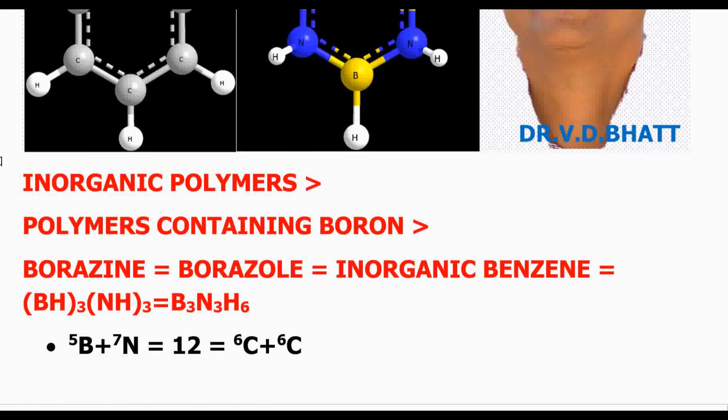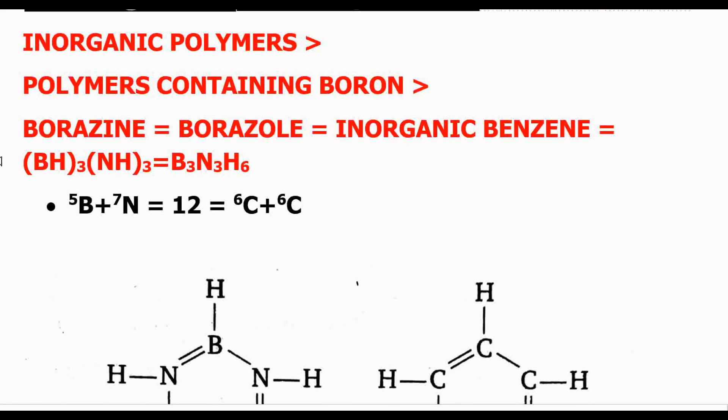Let me give you a brief introduction. You must have been conversant with the term polymers. The word polymer is a Greek word made up of two words, poly and mer. In Greek language, poly means many and mer means part. So polymer is something which has many parts. In chemistry, we say that a polymer is a giant or large molecule with very high molecular weight which is made up of repeating units.